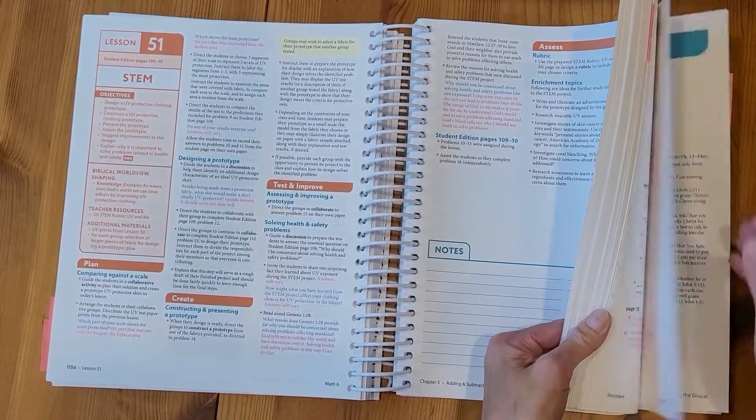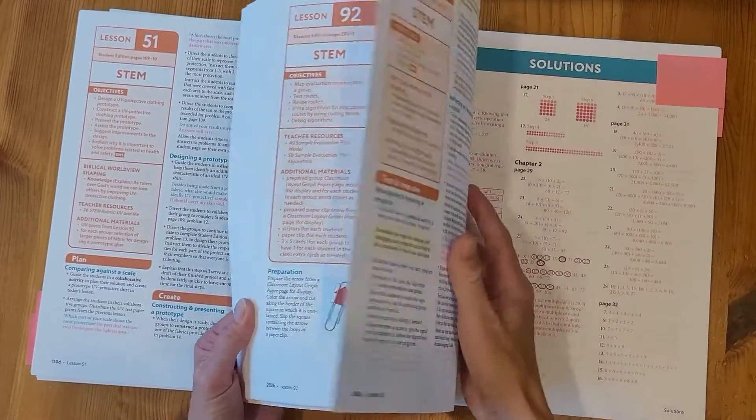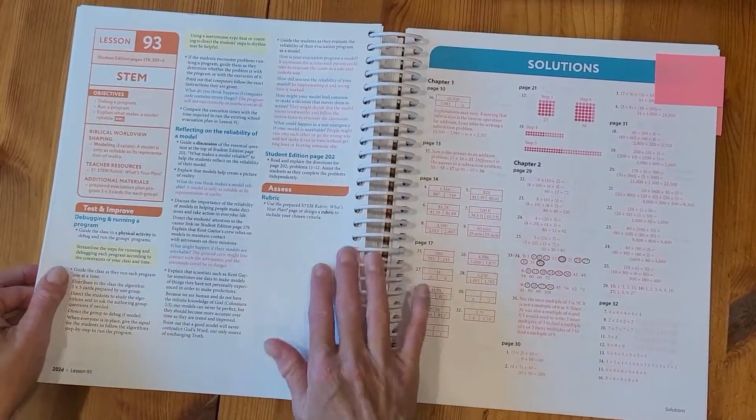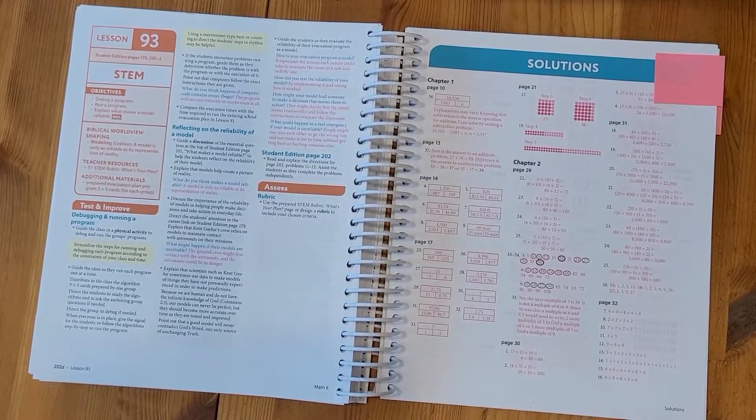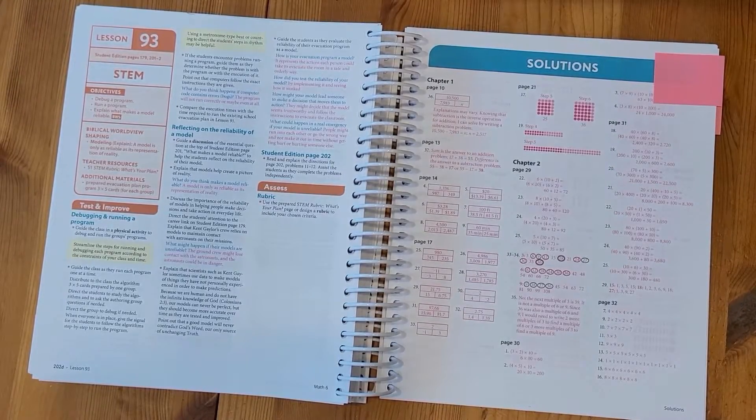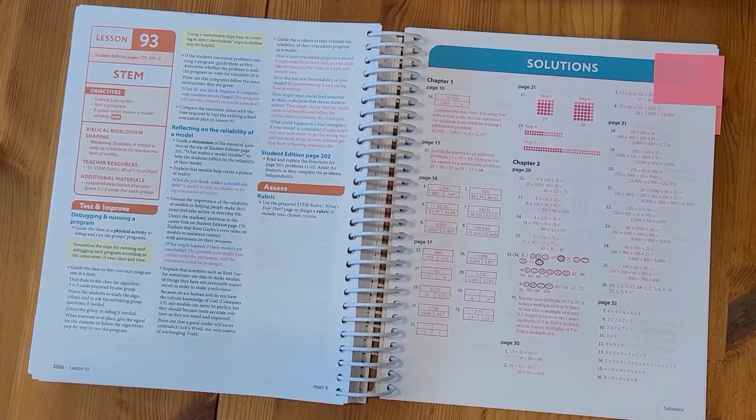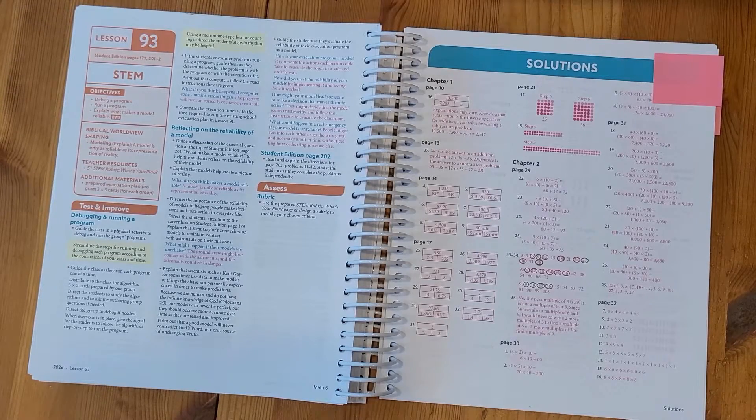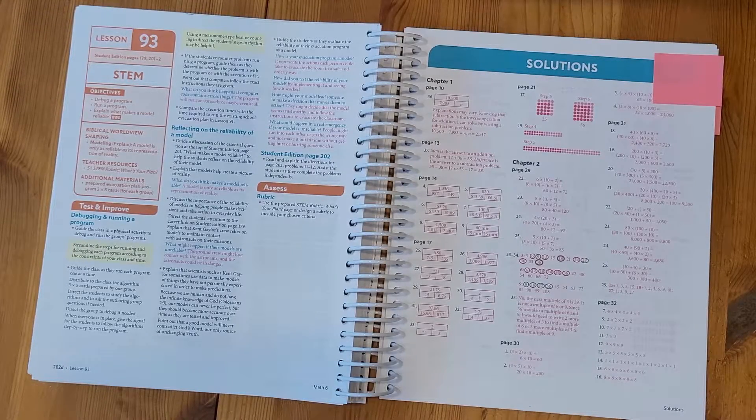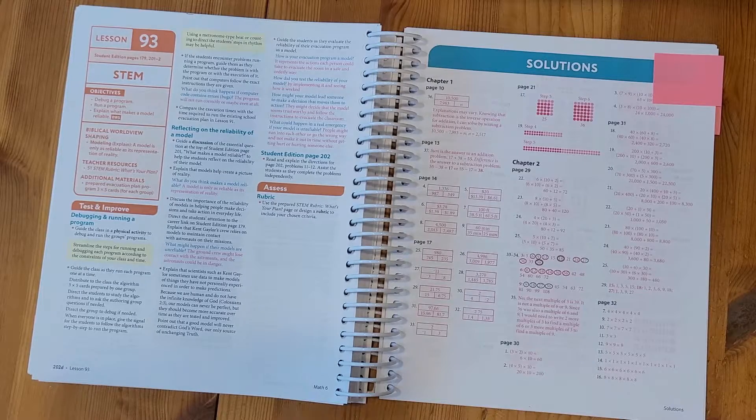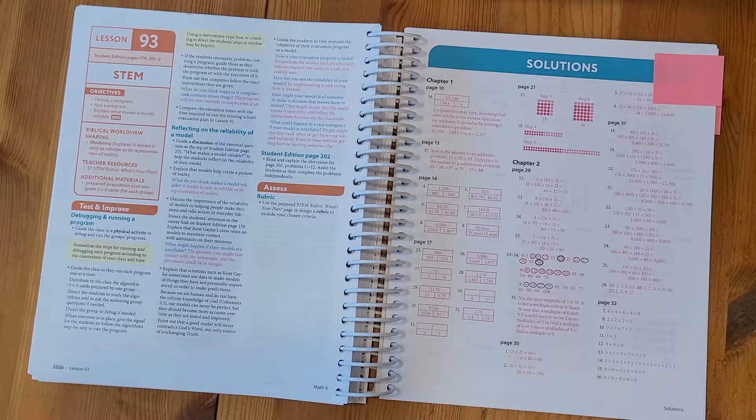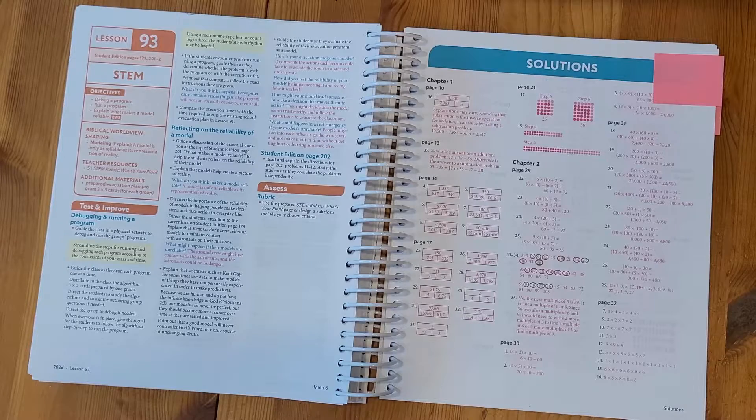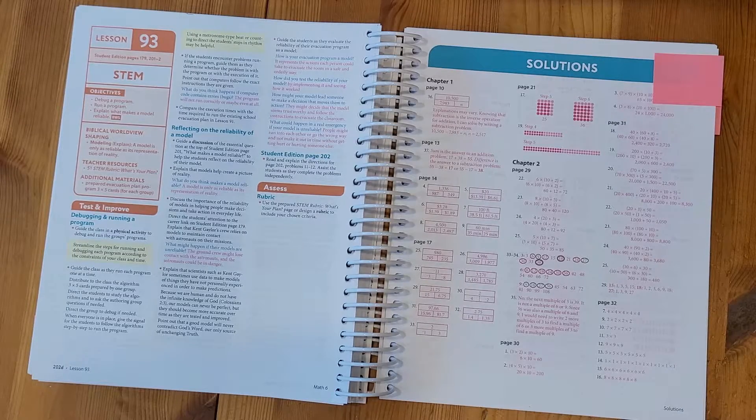I'm going to jump ahead again now to this back section called Solutions. Sometimes in the Teacher Edition, the response or answer to a problem might be a little bit too long to fit onto the Teacher Edition page. If that happens, there is a section in the back called Solutions and it will give a more detailed answer for you to be able to check your child's work.